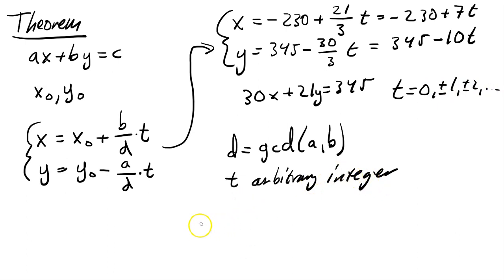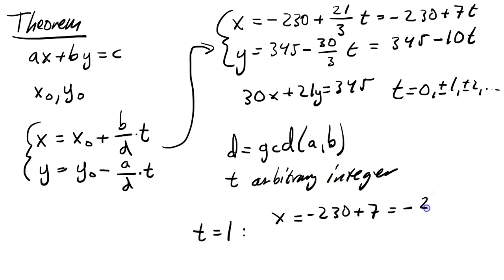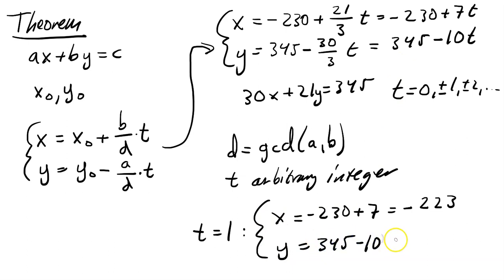For example, if we choose t = 1, then x = −230 + 7 = −223 and y = 345 − 10 = 335. That gives another valid solution to the equation. By using different values of t, we can find infinitely many solutions.